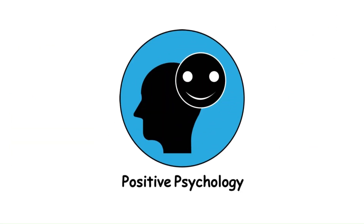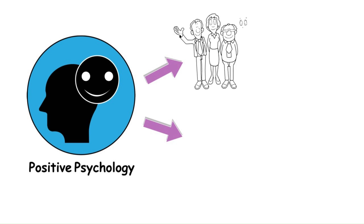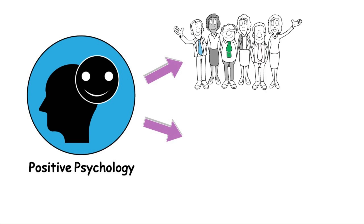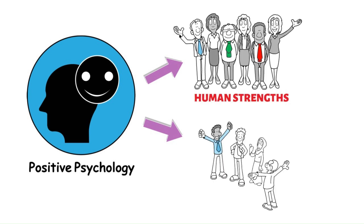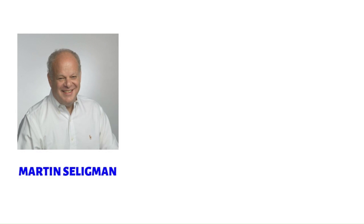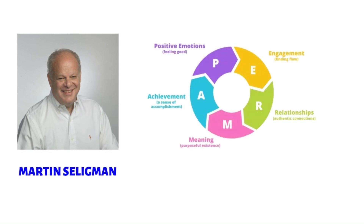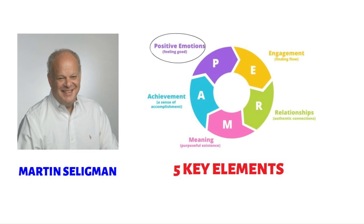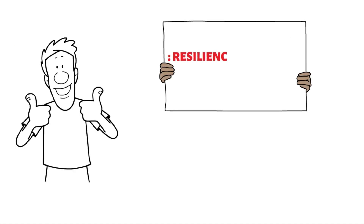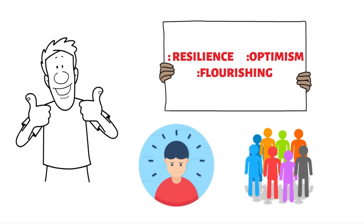Positive Psychology is concerned with understanding and promoting human strengths and well-being. Martin Seligman proposed the PERMA model, which identifies five key elements of well-being: positive emotions, engagement, relationships, meaning, and accomplishment. Positive Psychology aims to cultivate resilience, optimism, and flourishing in individuals and communities.